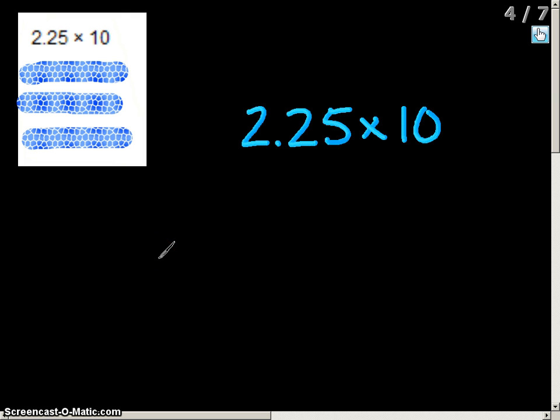So now I have my problem of 2 and 25 hundredths times 10. Now instead of writing this problem vertically, I have it horizontal, and the only thing that will change in this problem is the location of the decimal. So what I will do is write 2.25 over again.